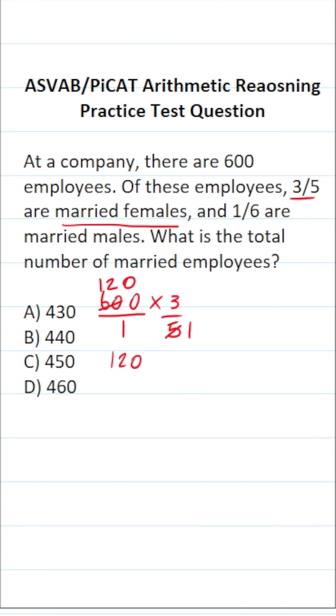This becomes 120 over 1, which is 120 times 3 over 1, which is 3. And so as not to make a mistake, I'm going to do this part off to the side.